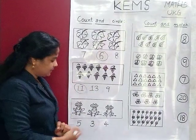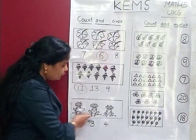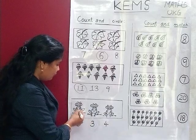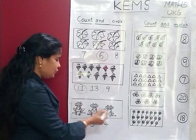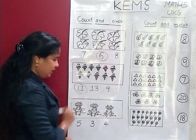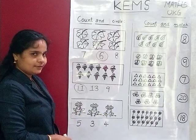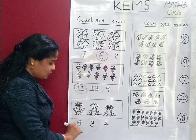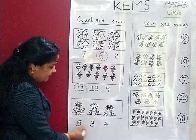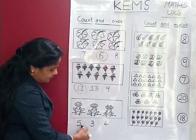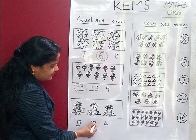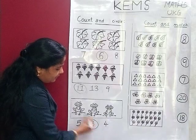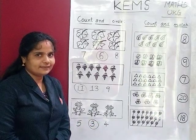Then how many frogs are there? Let's count: 1, 2, 3. There are 3 frogs. So where is number 3? Yes, this is number 3. So circle.